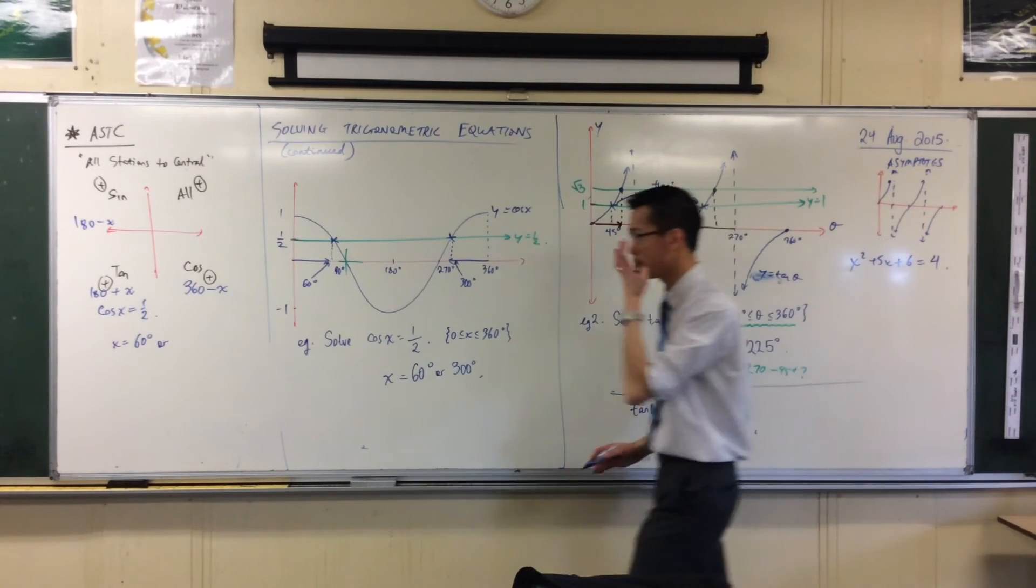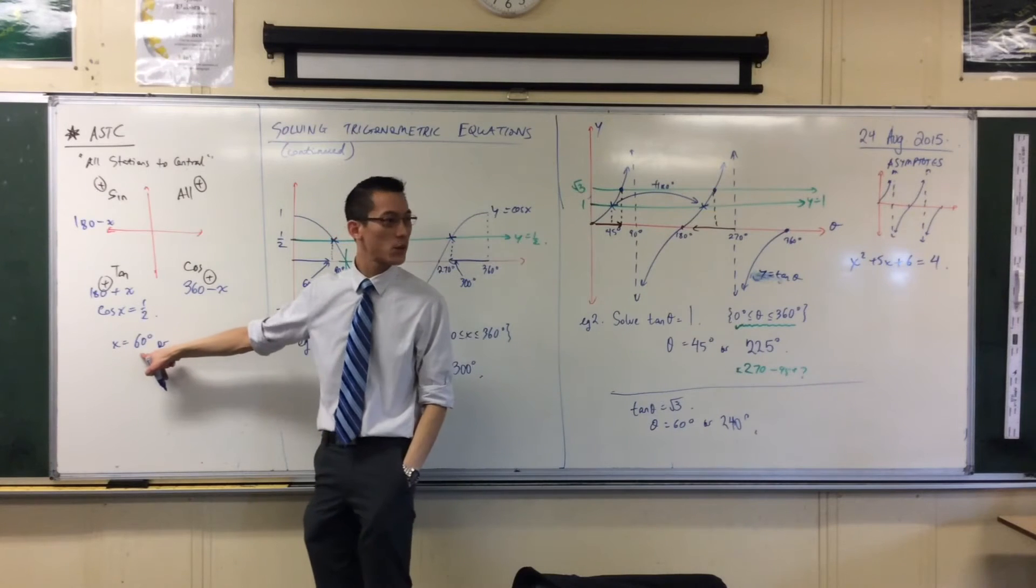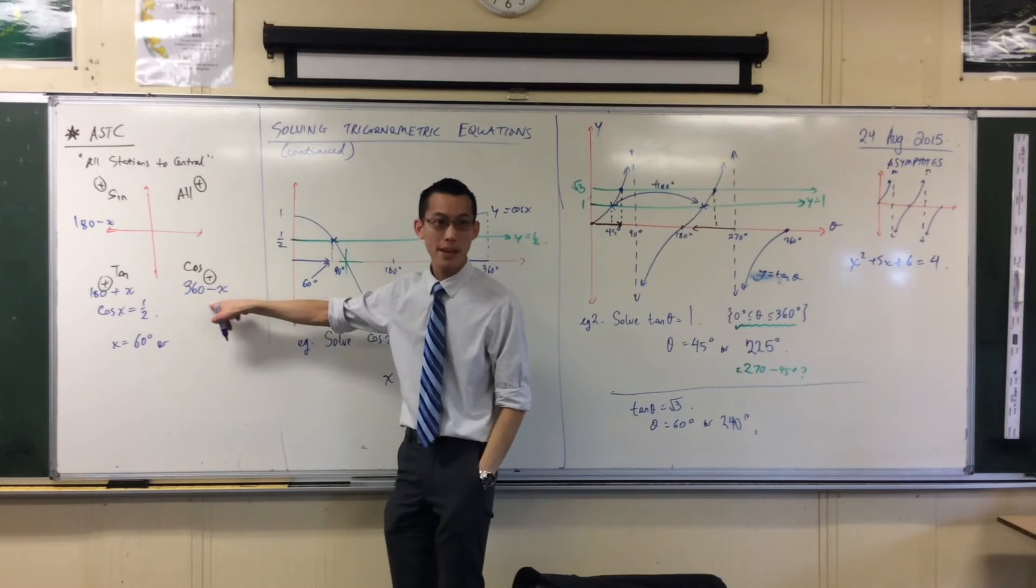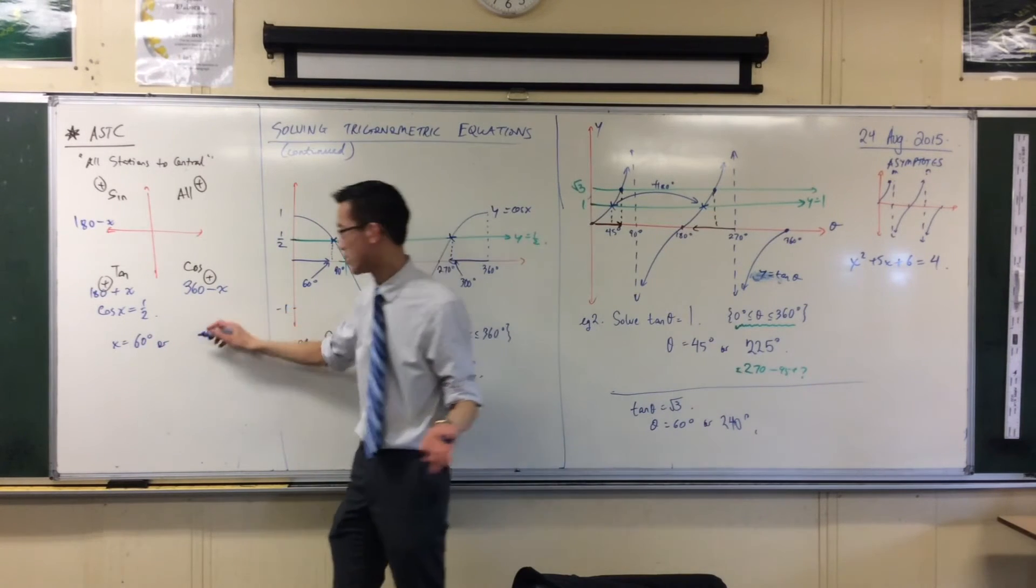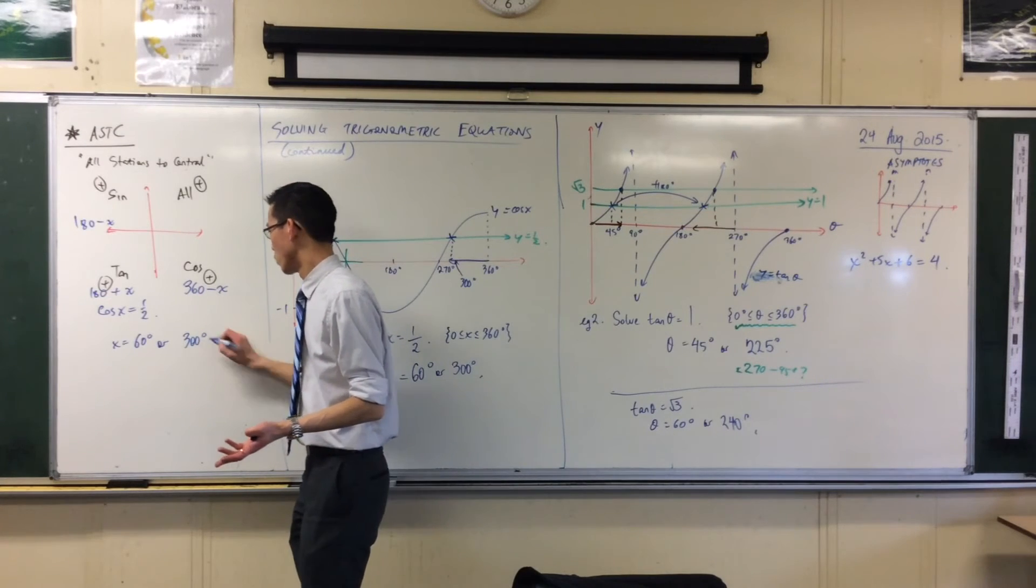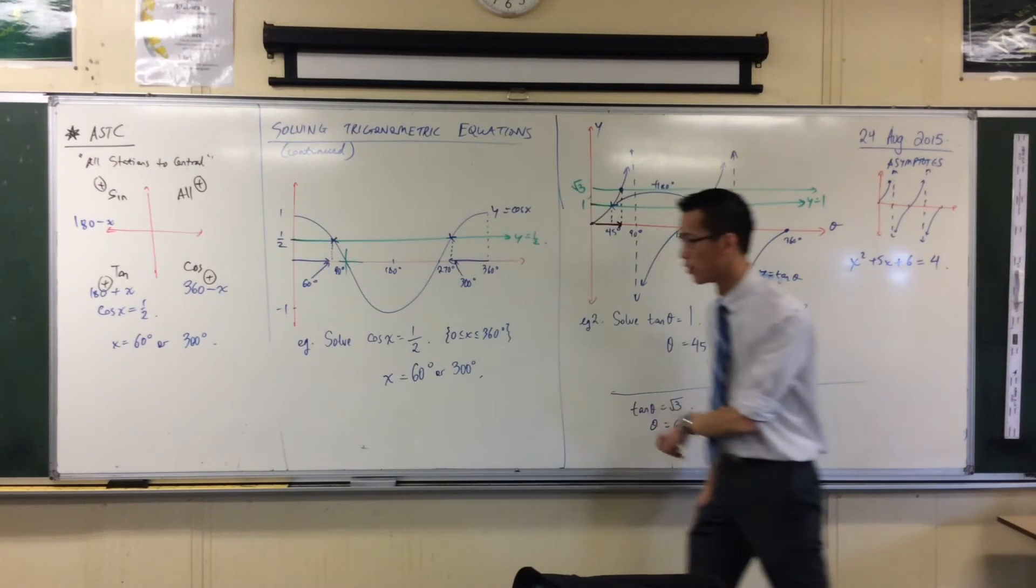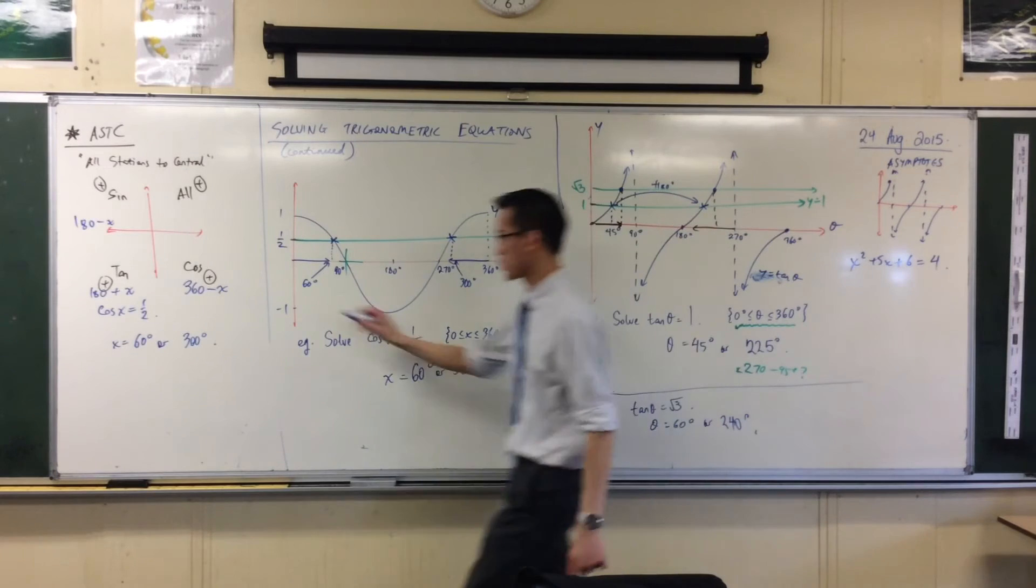So using this scheme, you can see, alright, well if my first angle is 60, my second one will be 360 take away 60, which is 300, which is just what we got before. So that was the first one.